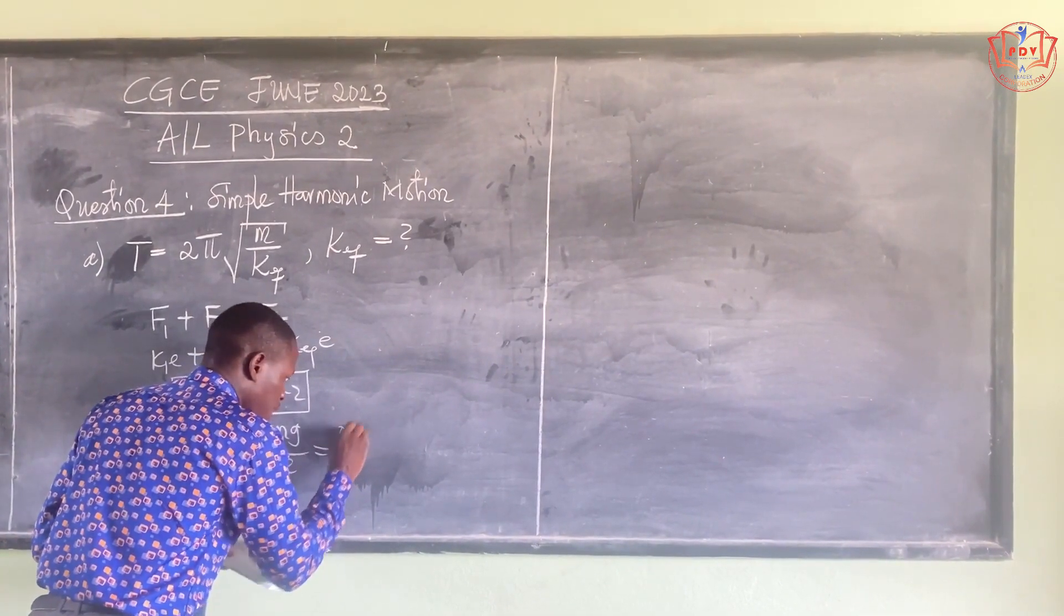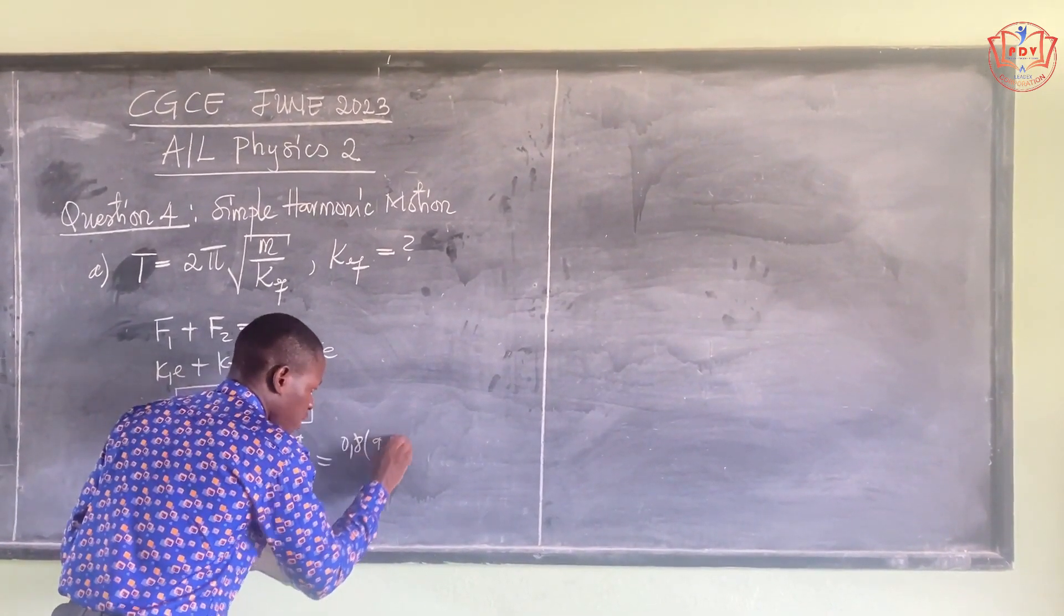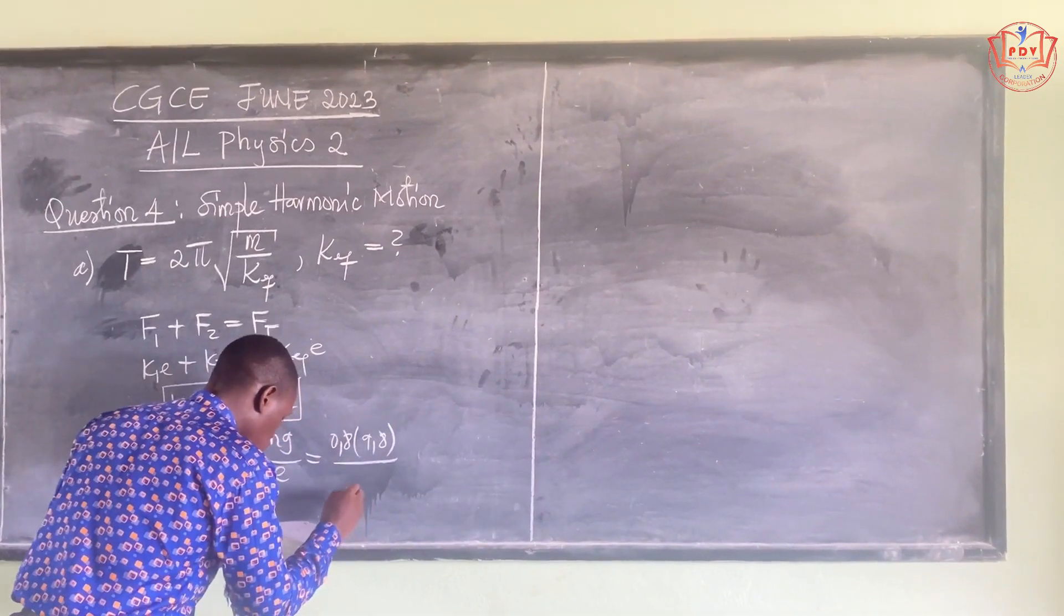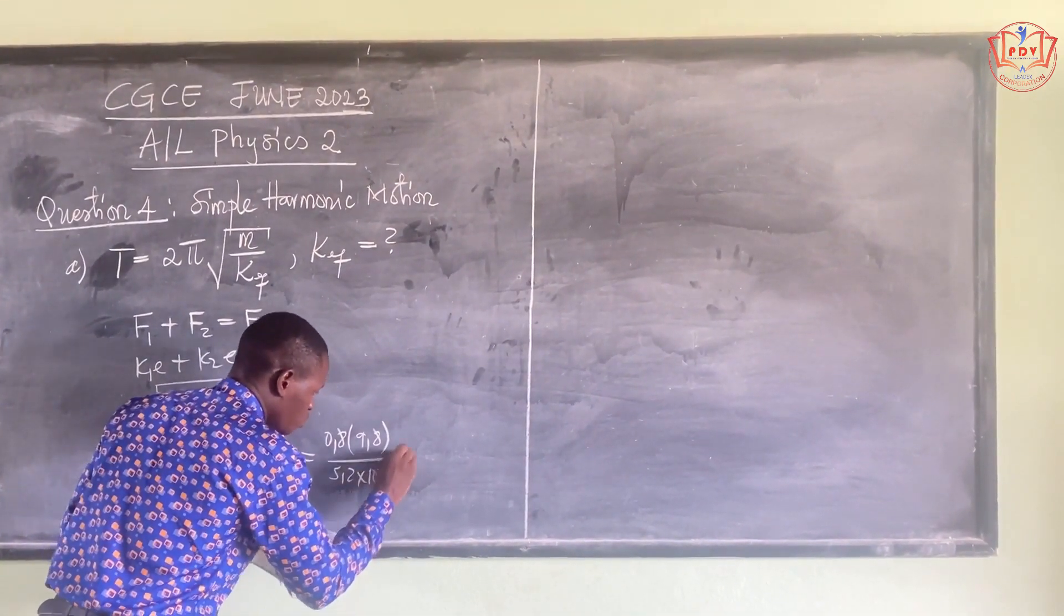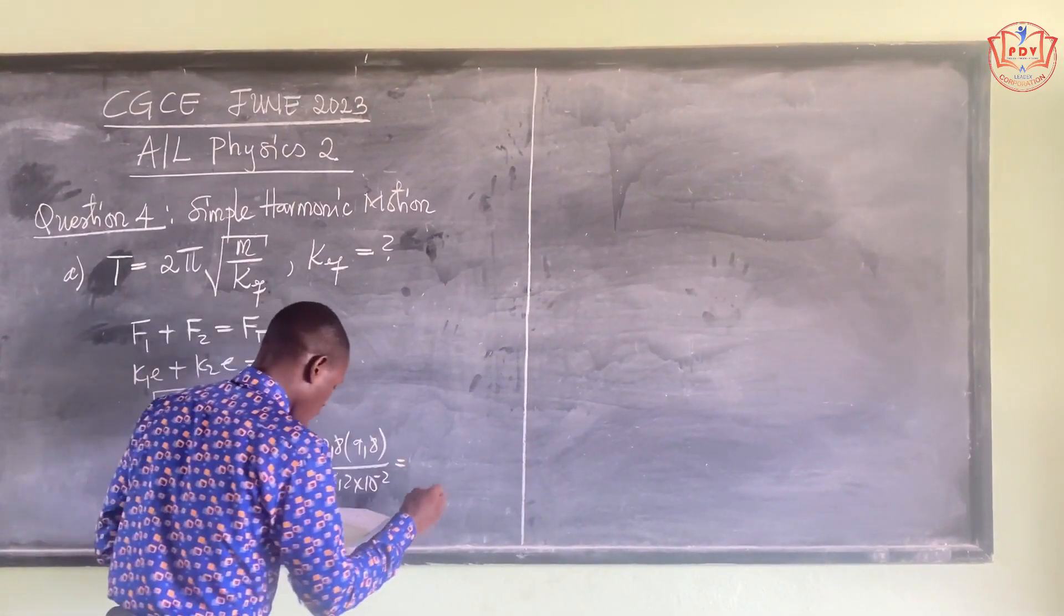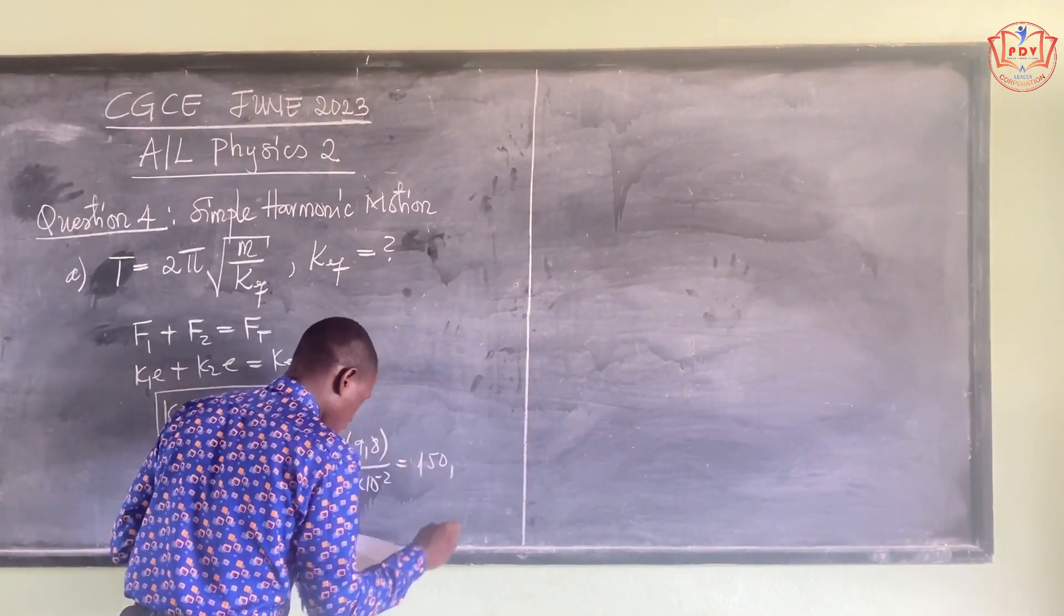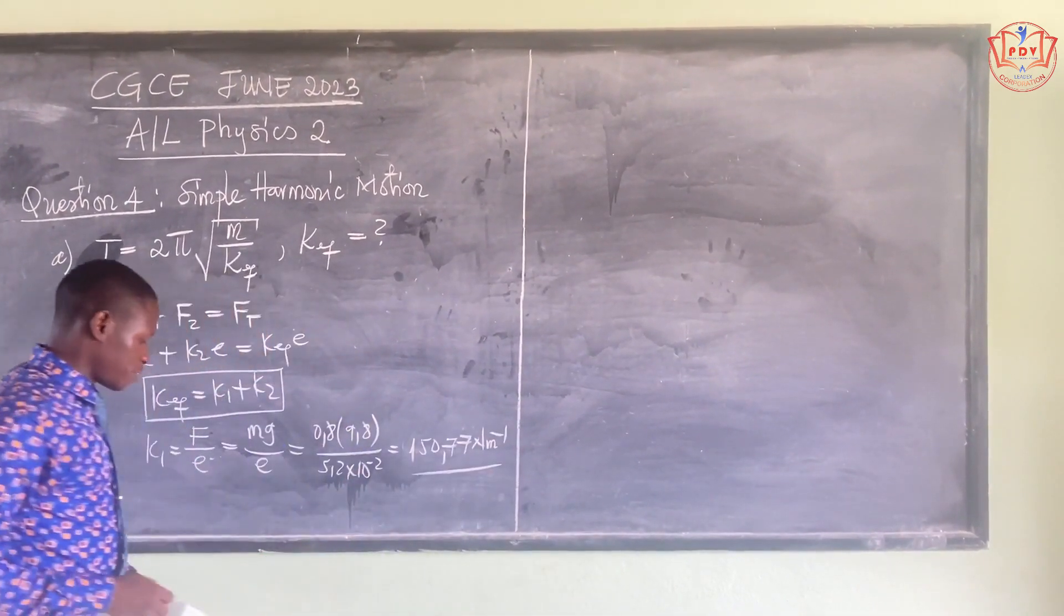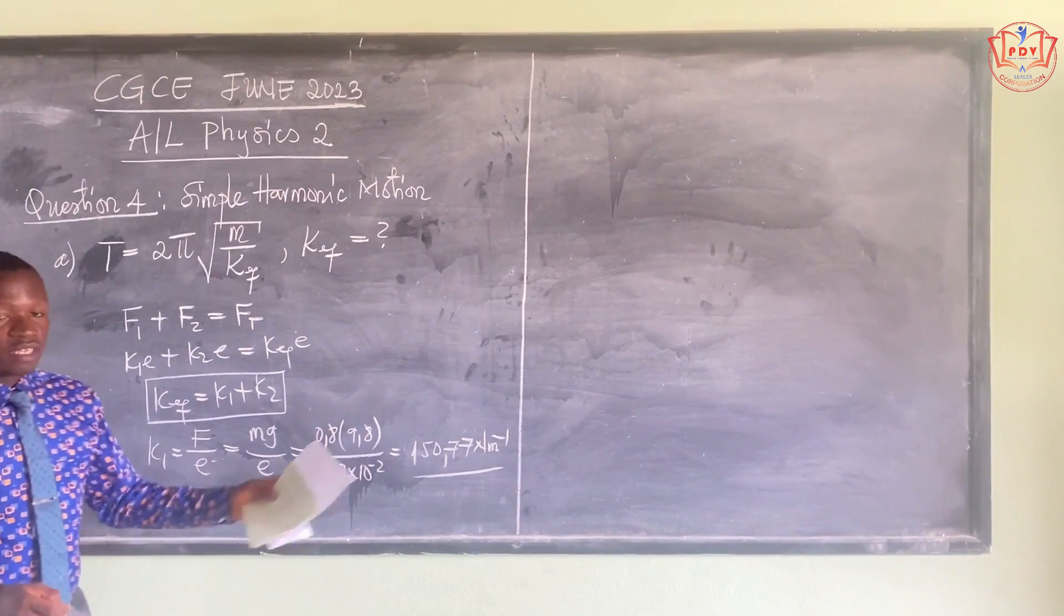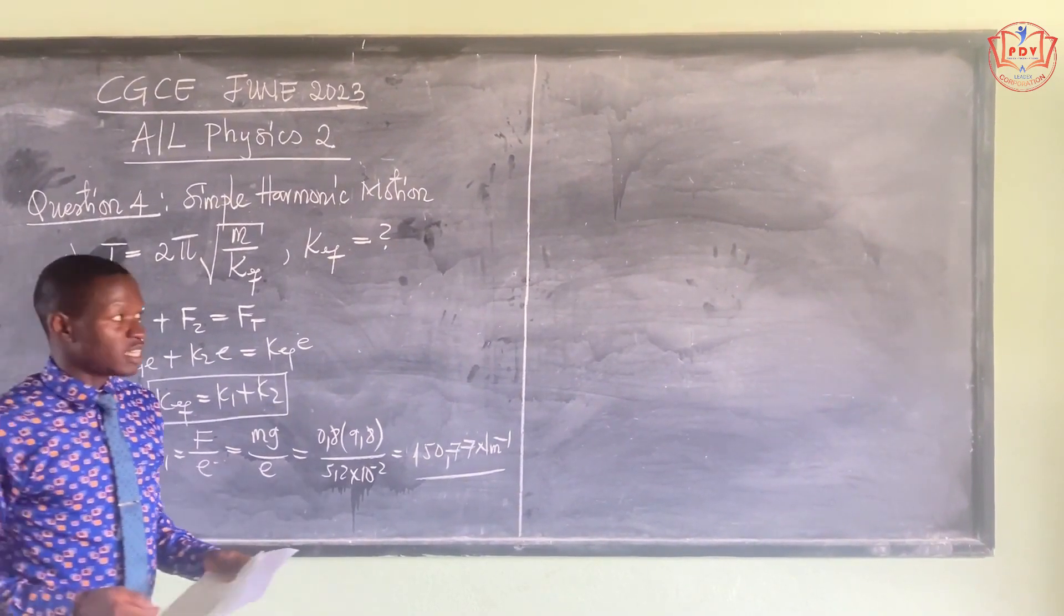And that gives us 150.77 newton per meter. So that is the spring constant of a single spring.